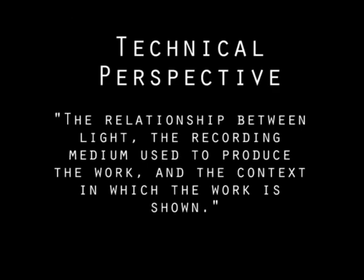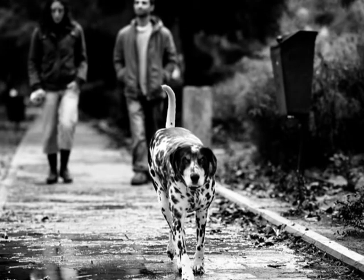Next up is the technical perspective: the relationship between light, the recording medium used to produce the work, and the context in which the work is shown. When analyzing photos, one must have an understanding of the technical elements of taking a picture. How did the photographer make the dog the center of this image? What kind of lens was used when taking the picture? And where was the photographer positioned when taking the picture?